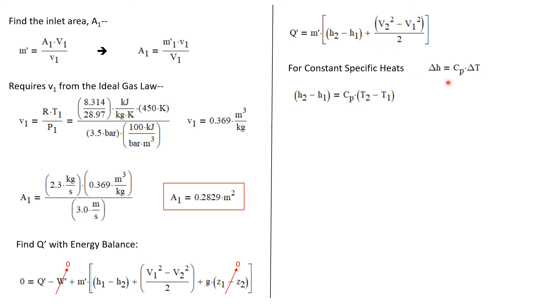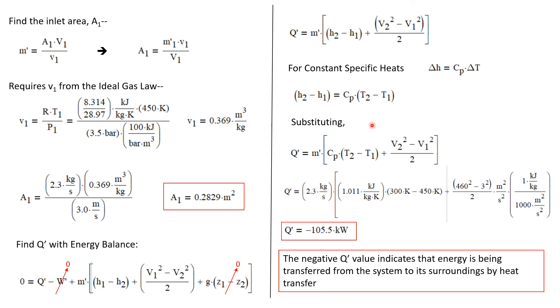Now, delta H, when we have constant specific heats, the change in specific enthalpy can be simply written as C sub P delta T. Or in this case, H2 minus H1 is C sub P times T2 minus T1. So we can go ahead and substitute that in our energy balance. Now we have Q dot is the mass flow rate times C sub P times T2 minus T1 plus the kinetic energy term, V2 squared minus V1 squared over 2.